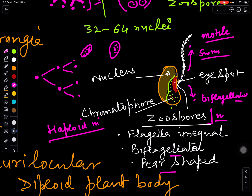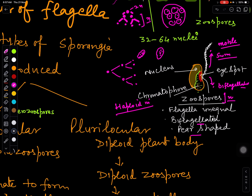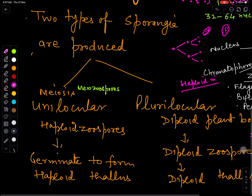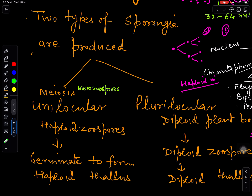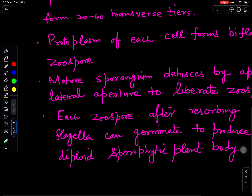These haploid zoospores will develop into a haploid plant body, because they are produced after meiosis. Unilocular haploid zoospores will germinate to form a haploid thallus of Ectocarpus. Because they are produced after meiosis they are called meiozoospores. These are the asexual reproductive bodies of Ectocarpus produced in the unilocular sporangium.